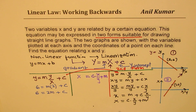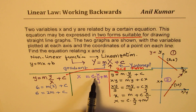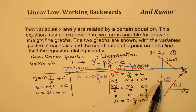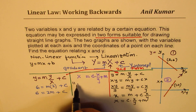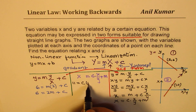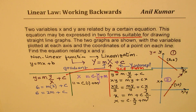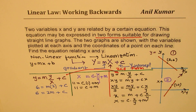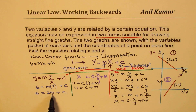We are given the point (1, 11) on this linearized curve. The X-axis value (X over Y) is 1, and the Y-axis value (X) is 11. So we write: 11 = C × 1 + M, giving us our second equation: 11 = C + M.